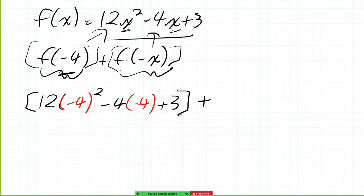Then we have our plus, and then we have the second part. 12 again, but this time we substitute -x in, that is squared, minus 4(-x) also, plus 3. Now that we've done that, we can start expanding and simplifying.